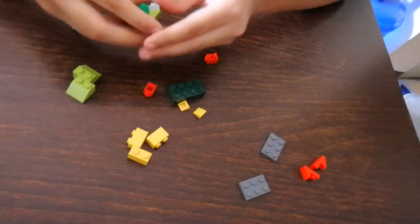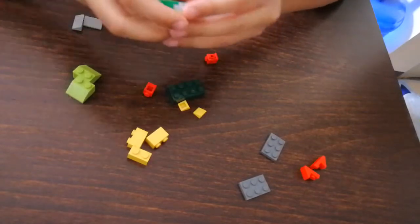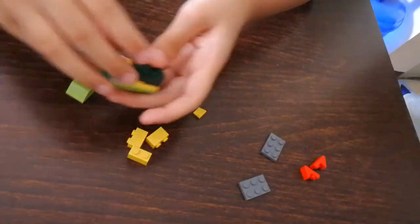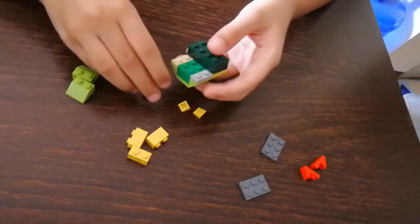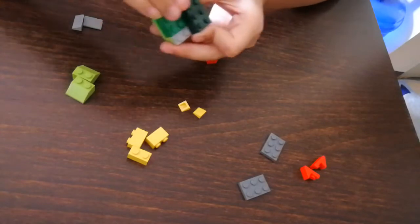Then you place a 2x2 brick on one of the sides and then right here. If you place it on that side, this is the front.